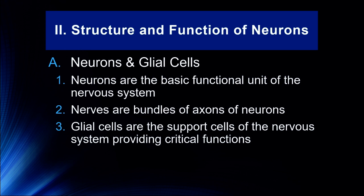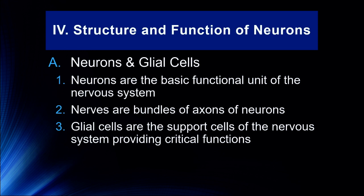Glial cells are the support cells of the nervous system, providing many different critical functions depending on the type of glial cell. Glial cells help clean up and protect the central nervous system and provide the support structure — the glue that holds the nervous system together. In fact, 'glial' means glue in Latin.